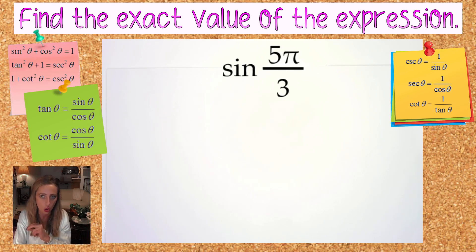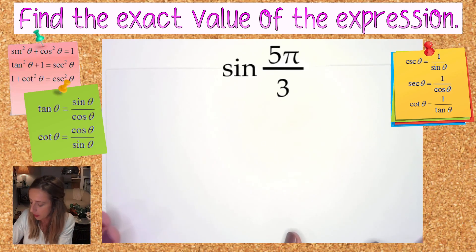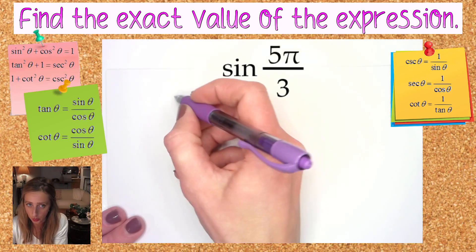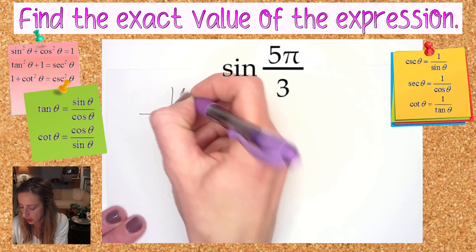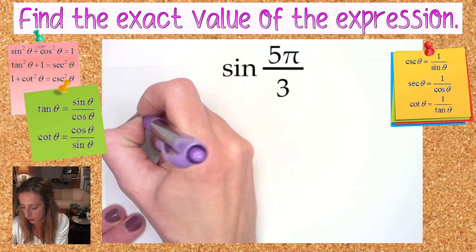To get this one started, we have the sine of 5π over 3. Sine is the y-value on the unit circle. We've got to know where 5π over 3 terminates on the unit circle: 1π over 3, 2π over 3, 3π over 3...